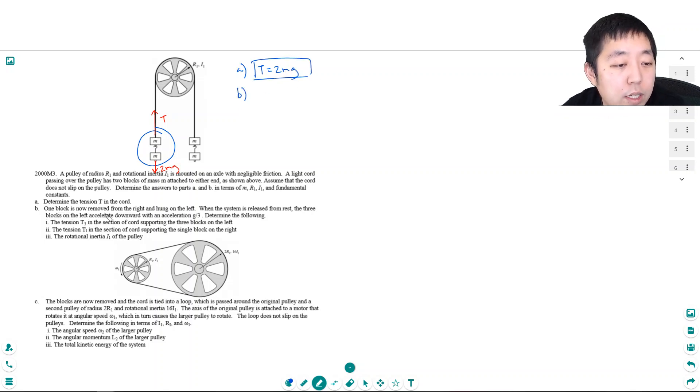Part B: One block is now removed from the right and hung on the left. When the system is released from rest, the three blocks on the left accelerate downward with the acceleration G over 3. Determine the following: The tension T3 in the section of cords supporting three blocks on the left, T1 in the section of cord supporting single block on the right, and the rotational inertia of the pulley.